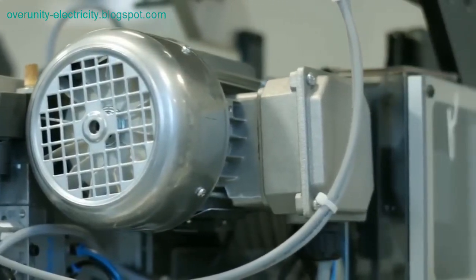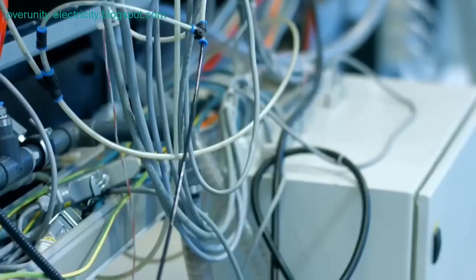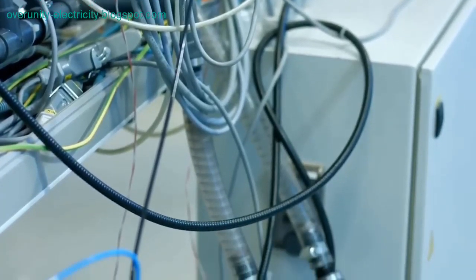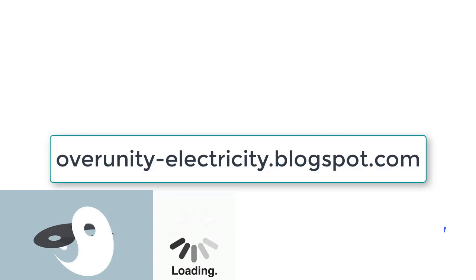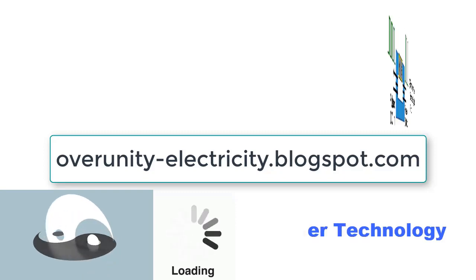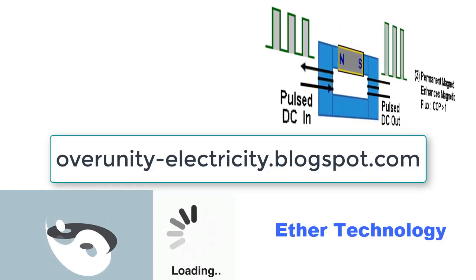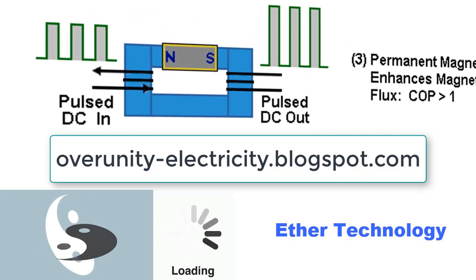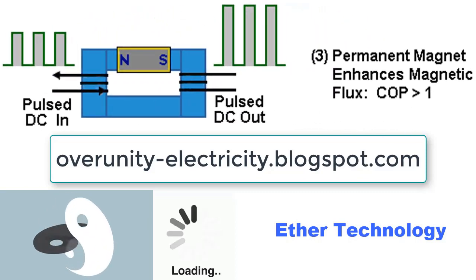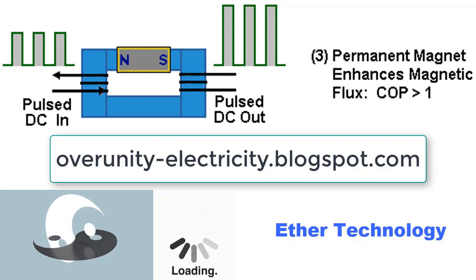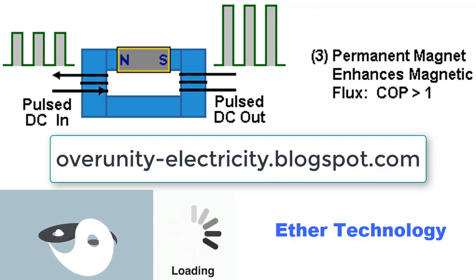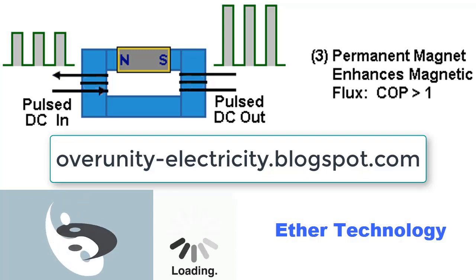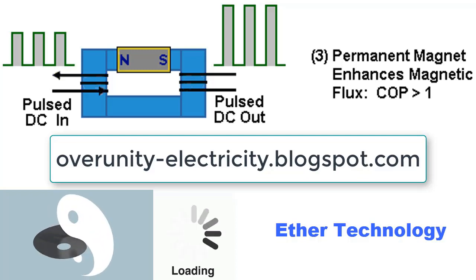As we navigate the complexities of harnessing free energy, the potential to revolutionize the world's energy landscape awaits. We have a gift for you: tricks to reduce your electricity bill by at least 75%, and the way to complete energy independence — get rid of the monopoly of big energy and never pay for electricity again. Method: amplify electricity to make output power greater than input power. See the link in the description. Thanks for watching.